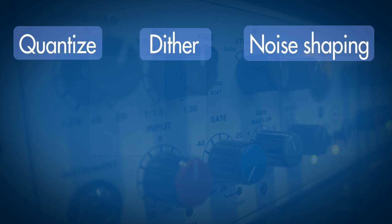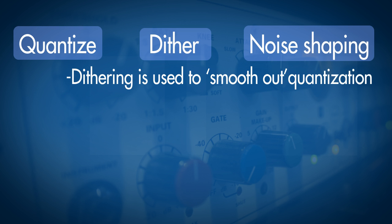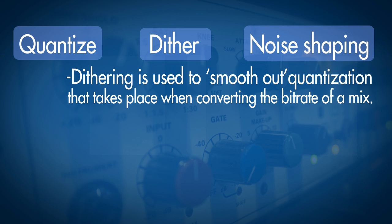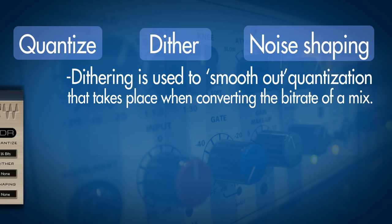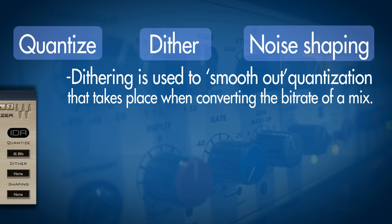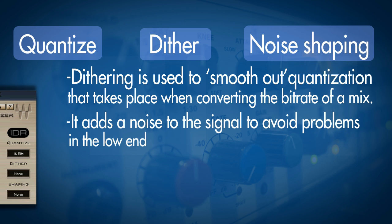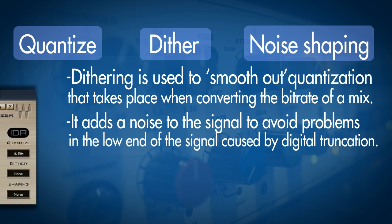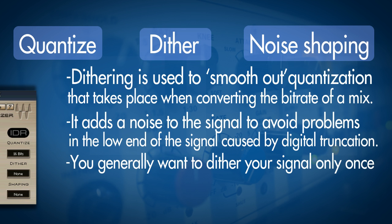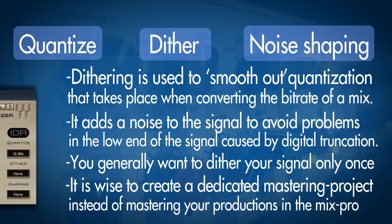I must point out that most maximizers out there actually have some quantization, dithering and noise shaping options as well, which really indicates that these are used for mastering purposes. If you're going to be using your maximizer as an insert on a track, then you really want to turn off dithering and quantization and keep that for the last stage where we're going to be converting our mix — let's say from 24-bit to 16-bit. That's really what these things are made for.